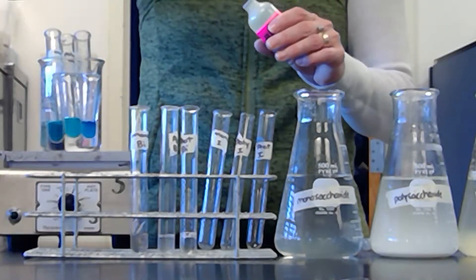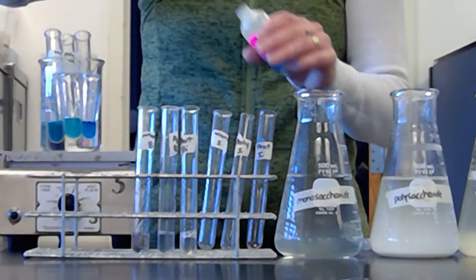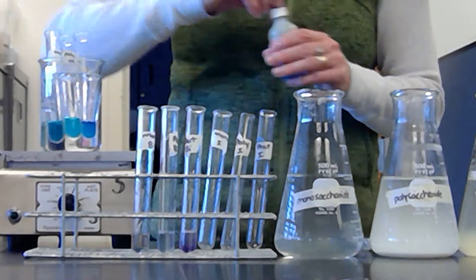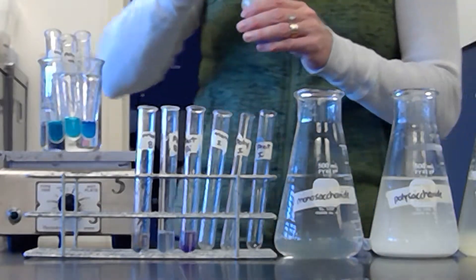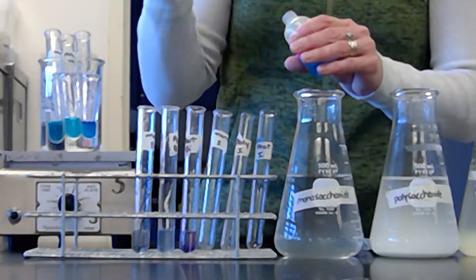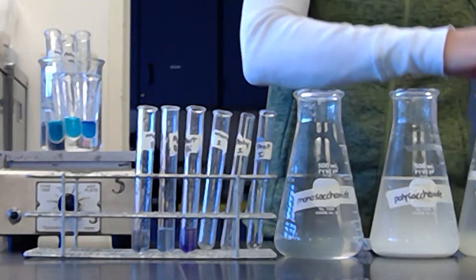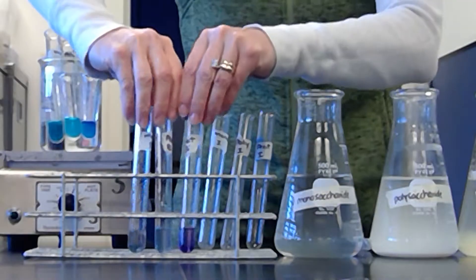So whenever you're looking for a change with any chemical reaction or any sort of change, you're going to look for a color change. And so I'll give this a squirt into the monosaccharides, a squirt into the polysaccharides, and then a squirt into the proteins. I'm going to give them two squirts just because then you can see a little bit better.